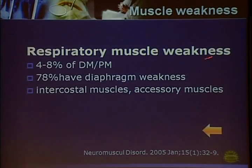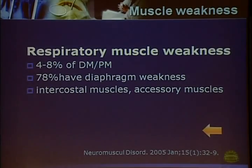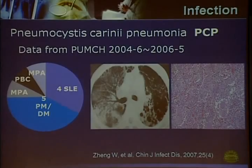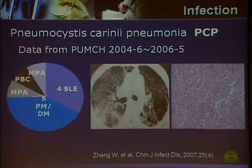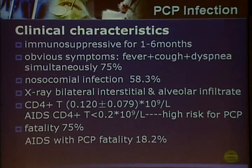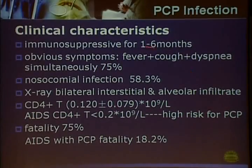Respiratory muscle weakness can also be found in myositis patients. Some patients may have diaphragm weakness and intercostal and accessory muscle involvement that can aggravate interstitial lung disease, but this occurs in less than 10% of patients. PCP infections are most commonly seen in autoimmune diseases, including myositis patients, microscopic polyangiitis, and others. PCP infection usually occurs after one to six months of immunosuppressive treatment.